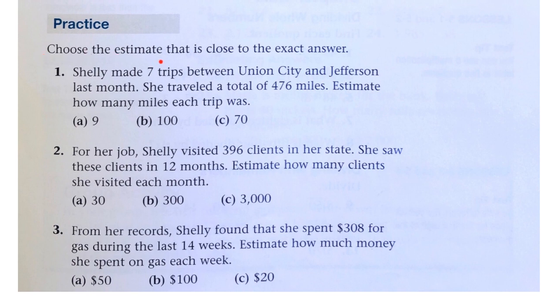So, let's choose the estimate that is close to the exact answer. Shelly made seven trips between Union City and Jefferson last month. She traveled a total of 476 miles. Estimate how many miles each trip was.